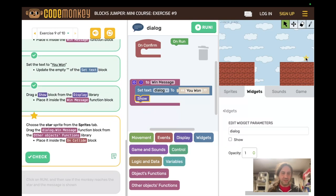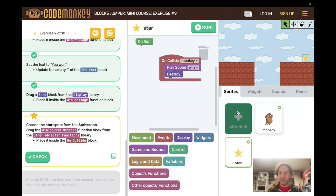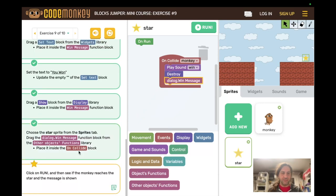And then a draw a show block from the display library inside the win message function block. Now choose the star sprite from the sprites tab. Again, you can choose the star from the game screen or from the sprites tab. Drag the dialog dot win message function block from the other objects functions. So now other objects functions knows about this function that we just wrote. And we're going to put that dialog win message in the on collide block.